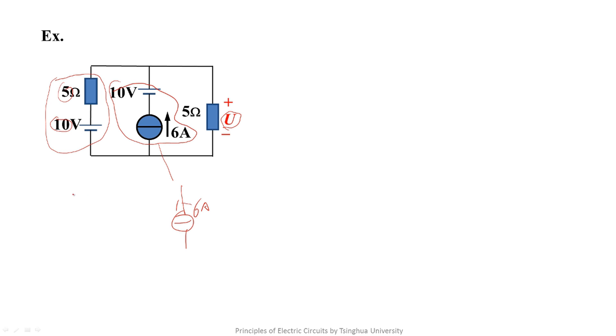So, what should be the corresponding current source? It is 10 over 5 with upward direction. The corresponding resistance should be 5 Ohm. We connect the two sub-circuits together and connect them with a 5 Ohm, which is not changed.